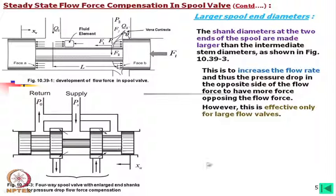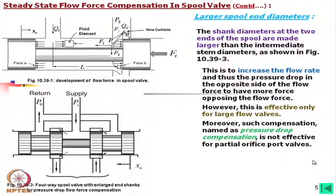This larger-diameter approach reduces flow force to some extent; however, it is effective only for large flow valves — for example, around a 25 mm diameter spool handling approximately 25 liters per minute. This mechanism is called pressure drop compensation. However, it is not effective for partial orifice ports — i.e., a few discrete rectangular ports instead of a full port.